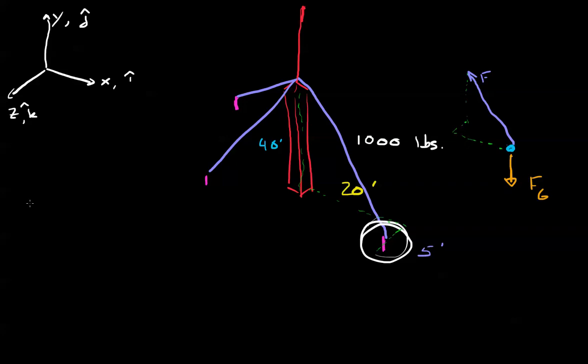Now we're going to use a really simple rule. I know that this is a tension. If I know it's a tension, I know the force is directed along the wire. If the force is directed along the wire, the direction of the wire is exactly the direction of the force.